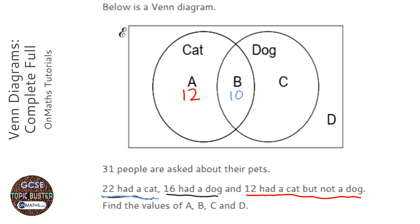Now we can then fill out this one, which says 16 had a dog. With 10 of them also had a cat, that leaves 6 people who have just had a dog.